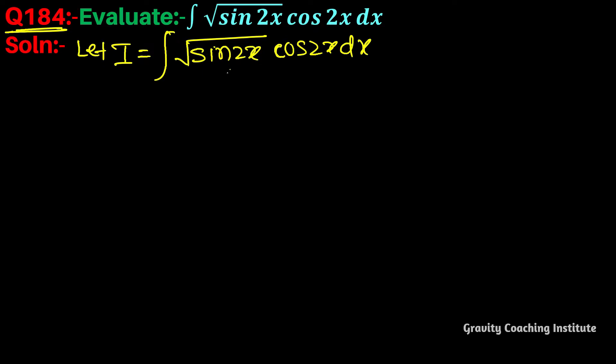This is the square root of sin2x, so let's put it to t². Putting sin2x equal to t², now differentiate with respect to t.